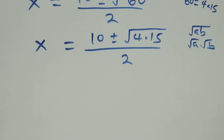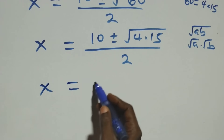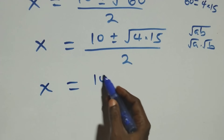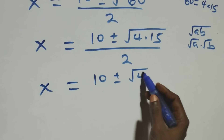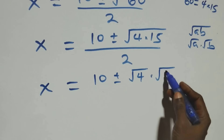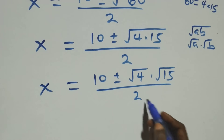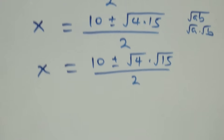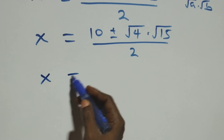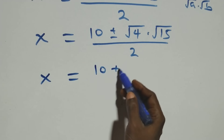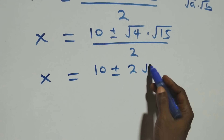This becomes x equals to ten plus or minus root four times root fifteen, all over two. Root four is two, so x equals to ten plus or minus two root fifteen, all over two.